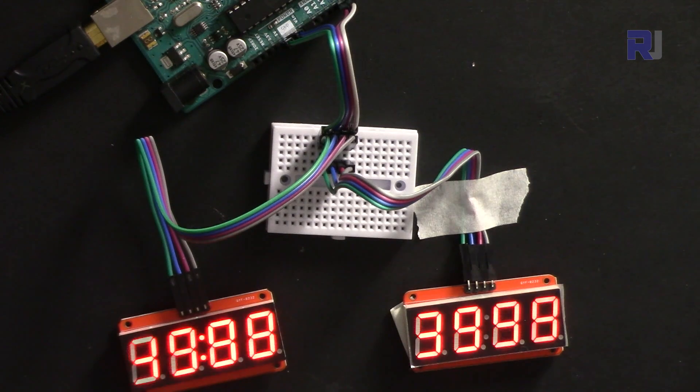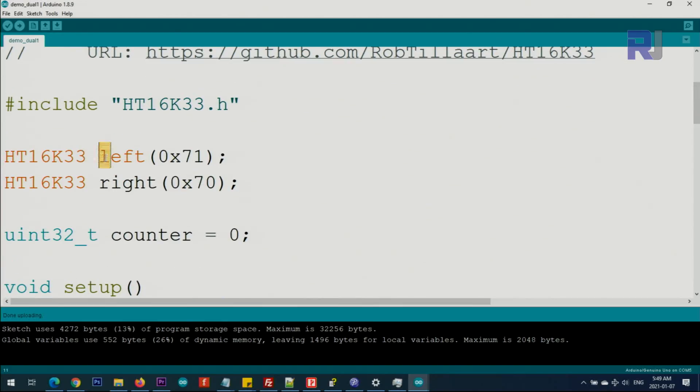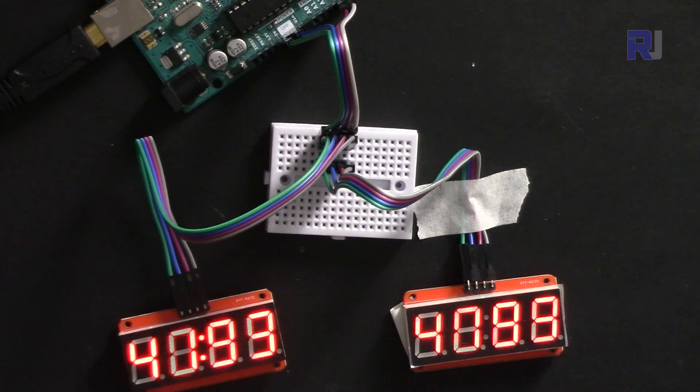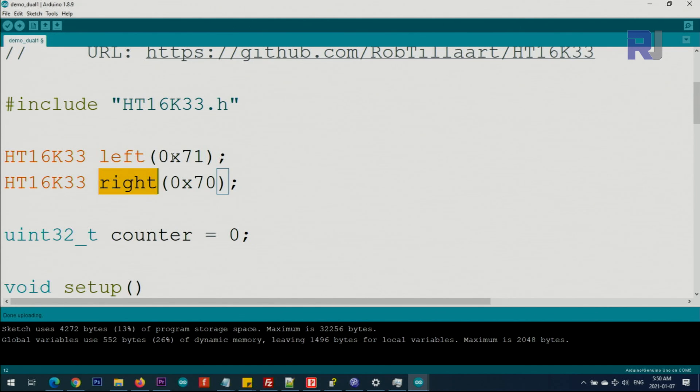This is the demonstration of using two displays simultaneously, and here's the code for it. First we define the display on the left side with the I2C address of 0x71, and the next one we call right with 0x70. We define the address, we get the class, and we define the display on the left side, which is this one, and the display on the right side. For each we pass the I2C address and they must be different. After that we just use left and right to refer and set them.